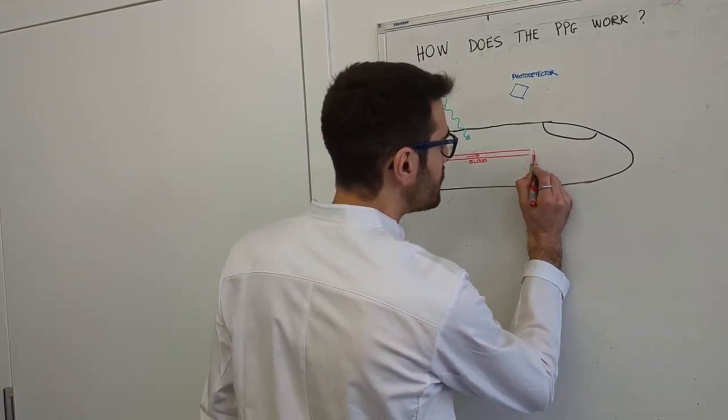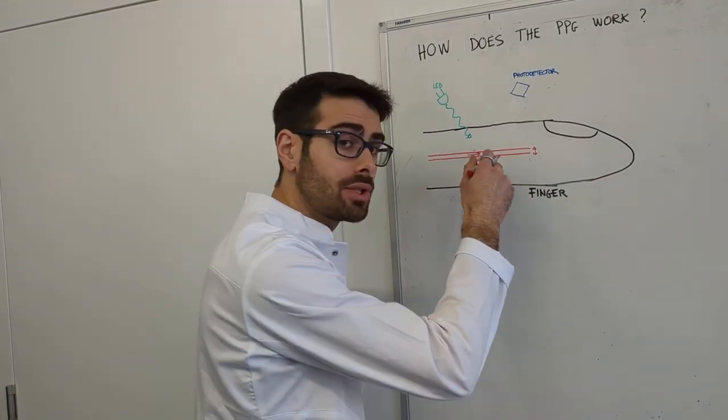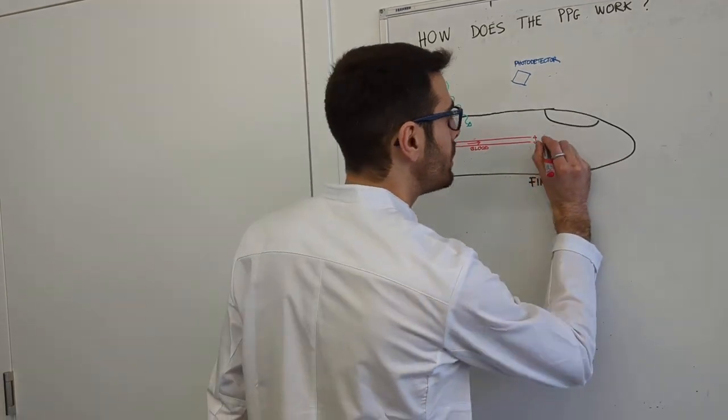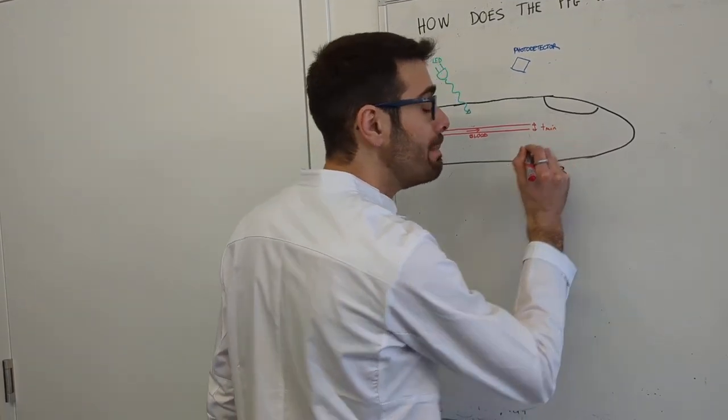Suppose that we call this thickness here, this section, this diameter of the artery, T-min, which is minimum thickness.